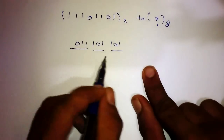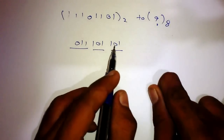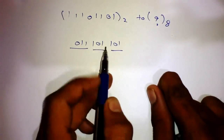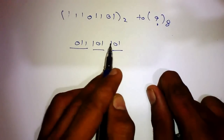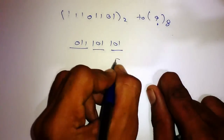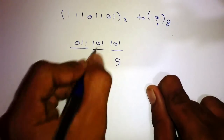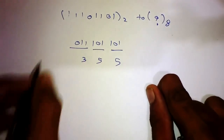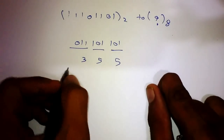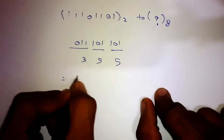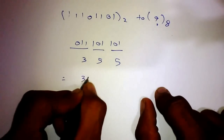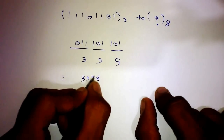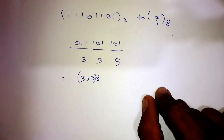Now we write the equivalent decimal value for each group. For 101 we have 5, for 101 we have 5, and for 011 we have 3. So the answer is the octal number 355, base 8.